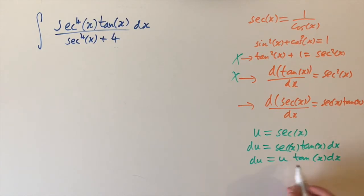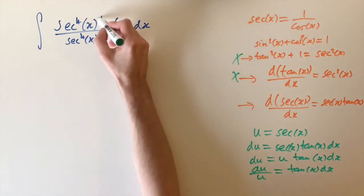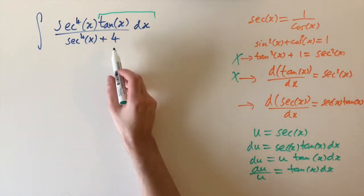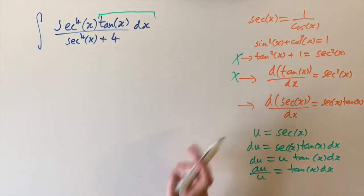And then if we want to replace this in this integral, if we divide by u, we have du over u equals tan of x dx. So we can just replace tan of x times dx, which is these last two terms, by du over u. And then what's left is just stuff involving sec of x, which we can replace by u.